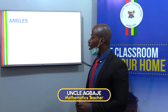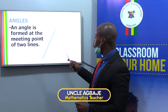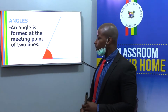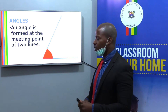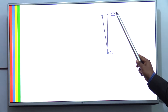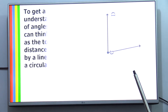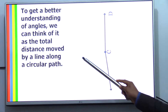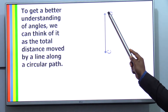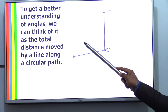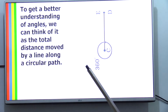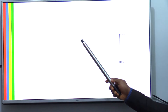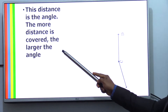Usually, we are told that an angle is the meeting point of two lines. When you have two lines come together and they meet, that is what you call an angle — the lines have to join to each other. To get a better understanding of angles, we usually think of angles as the total distance moved by a line that is moving around a circle, just like this line here. It moves around and as it moves, an angle is formed. As it moves farther, the angle increases. The farther the distance, the more the angle that is covered.